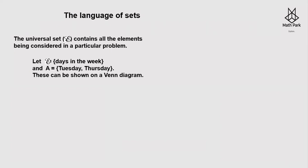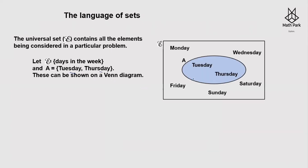Let us understand the language of sets. This symbol represents the universal set — that is everything which contains all the elements being considered in a particular problem. For example, if the universal set is the days in a week and A is a set of only Tuesday and Thursday, this is shown on the Venn diagram as the entire rectangle, with the oval representing set A.